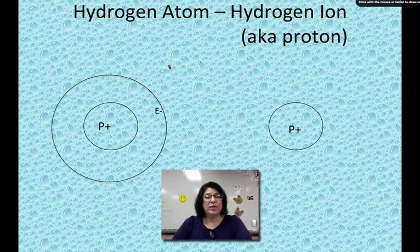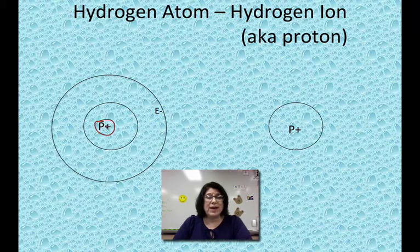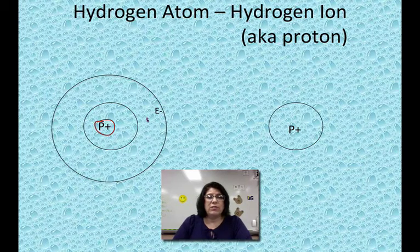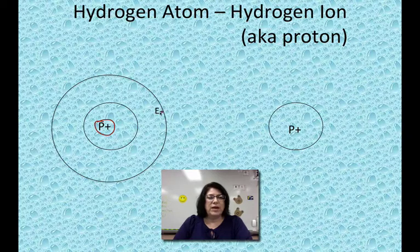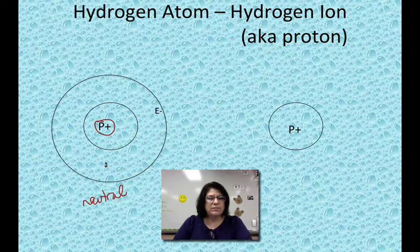First we need to have a little bit of a recap about hydrogen. Let's look at a hydrogen atom. Hydrogen is element number one, so it just has one proton in its nucleus. It also has a mass of one, which tells us that it has no neutrons. It does have one electron in its first energy level. This is a neutral hydrogen atom — one of each.